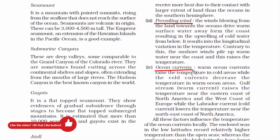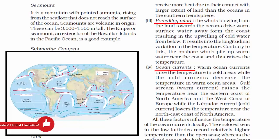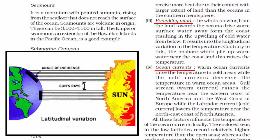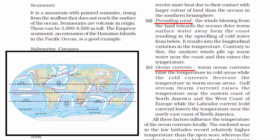The fourth factor affecting temperature distribution of ocean water is ocean currents. The red arrows represent warm ocean currents and the blue ones are cold. Most warm ocean currents originate at the equatorial region, which receives direct sunlight throughout the year. These warm currents move towards the polar regions in both hemispheres, while cold currents move towards the equatorial region. Warm ocean currents raise the temperature in cold areas, while cold ocean currents decrease the temperature in warm ocean areas.